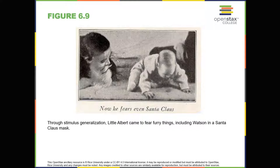Watson and Rayner then conditioned Little Albert to associate these stimuli with fear. Watson handed Little Albert the white rat, which Little Albert enjoyed playing with. Then Watson made a loud sound by striking a hammer against a metal bar behind Little Albert's head each time Little Albert touched the rat. Little Albert was frightened by the sound — a reflexive fear of sudden loud noises — and began to cry. Watson repeatedly paired the loud sound with the white rat, and soon Little Albert became frightened by the white rat alone. Days later, Little Albert demonstrated stimulus generalization — becoming afraid of other furry things: a rabbit, a furry coat, and even a Santa Claus mask.